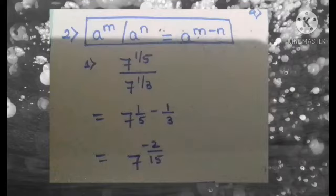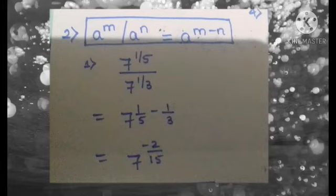Next, an example for the second law: a raised to m divided by a raised to n equals a raised to m minus n. The question is 7 raised to 1/5 divided by 7 raised to 1/3, which equals 7 raised to (1/5 minus 1/3), which equals 7 raised to minus 2/15.